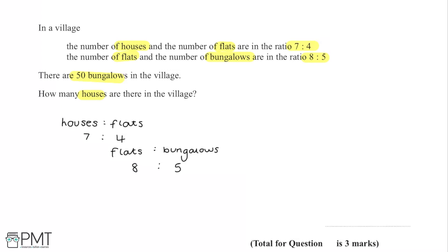Between the 4 flats and the 8 flats in these two ratios, we can multiply the houses-to-flats ratio by 2. Multiplying a ratio up by a factor doesn't affect it — it's just not in its simplest form anymore. So multiplying both sides by 2 gives us 14:8. The ratio of flats to bungalows remains 8:5, so when there are 8 flats there are 5 bungalows.